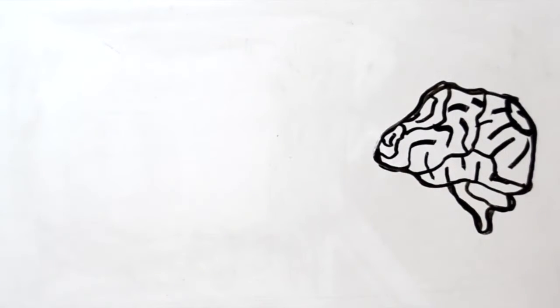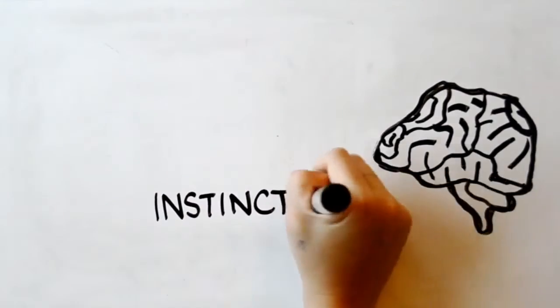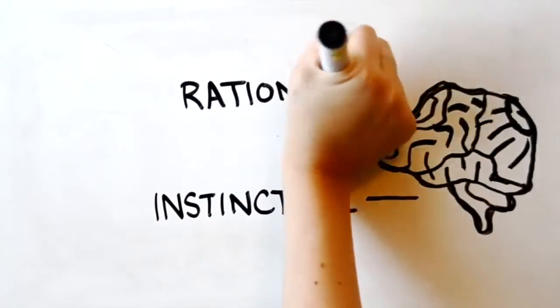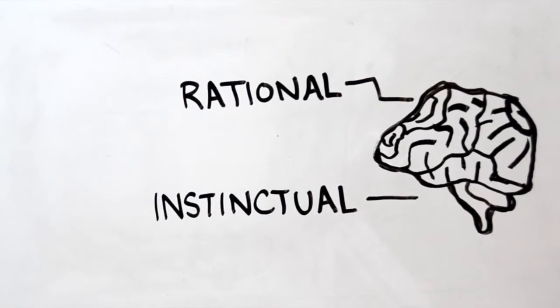Anxiety comes from an older area of the brain, the instinctual, emotional brain, rather than the more modern, rational brain.